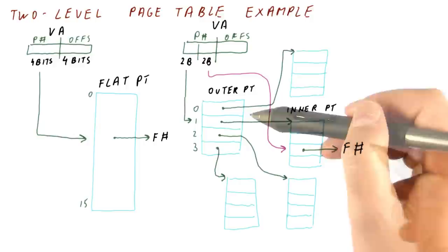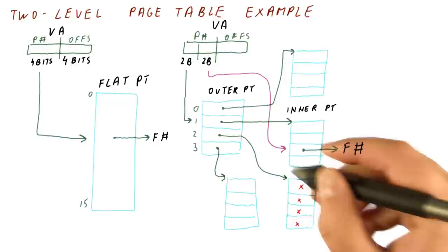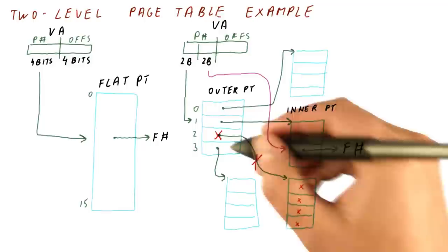The savings are in that if there is an unused large part of the address space such that all of these entries do not correspond to physical memory, then we don't need this, and we can mark here in the outer page table that the entry is not necessary, and then we can eliminate this inner page table.